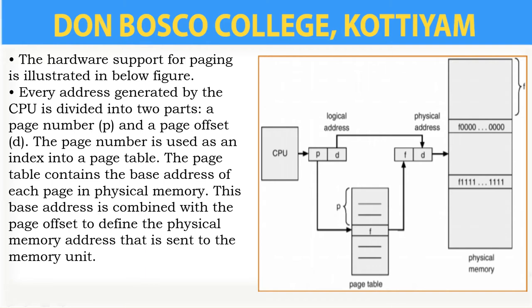The size of the frames and pages should be the same, because what we save in the frames will be saved in pages — the frame size and page size is fixed. When a process is to be executed, its pages are loaded into any available memory frames.